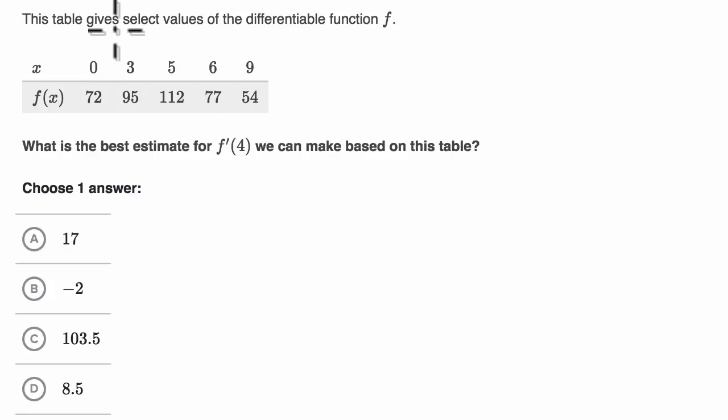We're told this table gives select values of the differentiable function f. So it gives us the value of the function at a few values for x. In particular, five different values for x. It tells us what the corresponding f of x is.